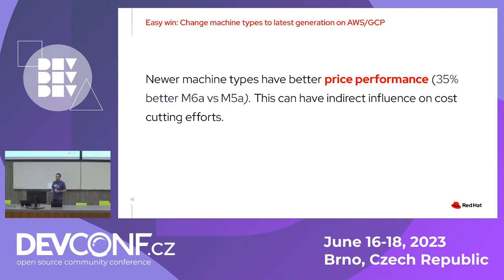This also refers to inspecting machine types more broadly. If you've been running a node for a long time, you might discover you're running on an old machine type. In that case, you can inspect and try to upgrade to something better, which brings better price-performance. This has an indirect but visible influence on your cost-cutting efforts.